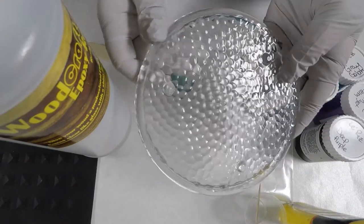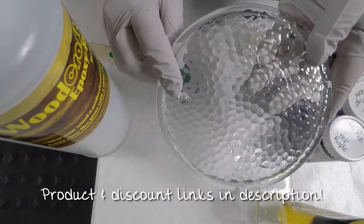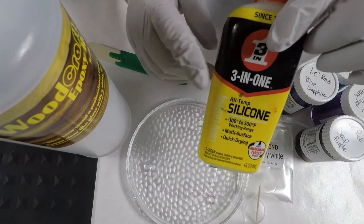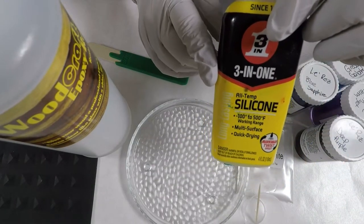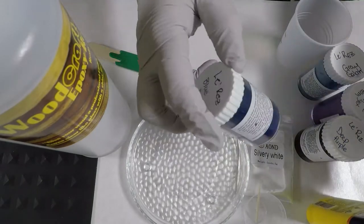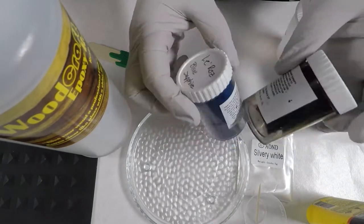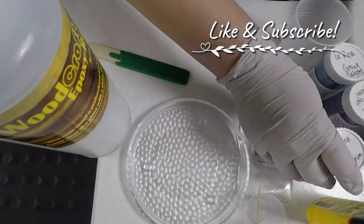I'll be using this glass candle plate that I picked up from the Dollar Tree and it has little feet on the bottom so there's less you need to do to finish the project. I've got three-in-one silicone oil I picked up from Walmart and I'll be using mostly Lorez Expressions mica powders. I've got blue sapphire and deep purple.